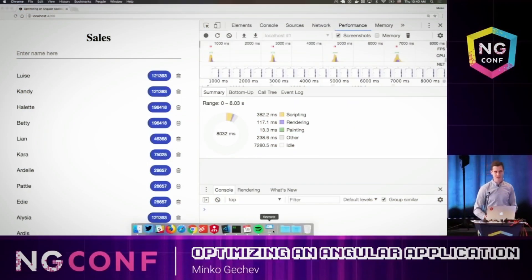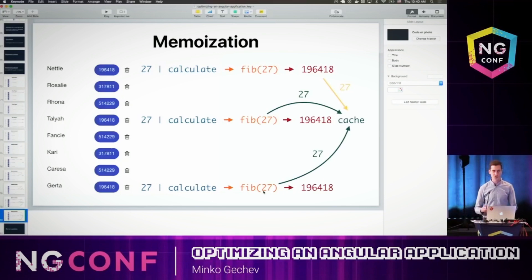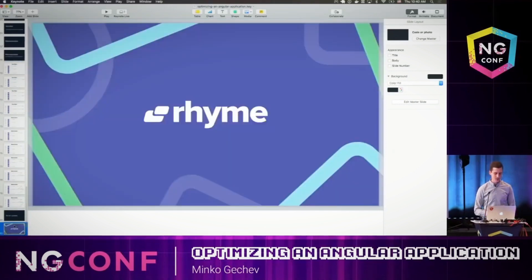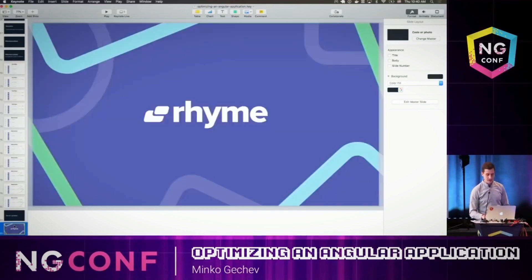My point with this example was to show that it's not necessary to do super fancy updates, running code outside of the Angular zone or something too Angular-specific all the time. There are concepts such as buffering and caching which we can apply across all different technologies, and we don't have to reinvent the wheel. With the real-time updates, we got such a performance improvement and also a slight UX improvement. That was everything I had today, and I'm happy to announce that this was also the official release of Rhyme.